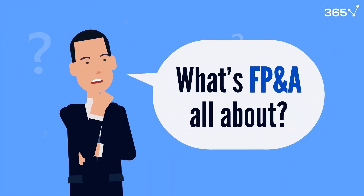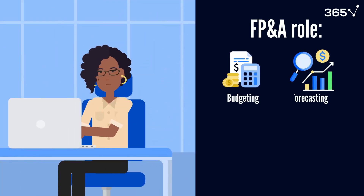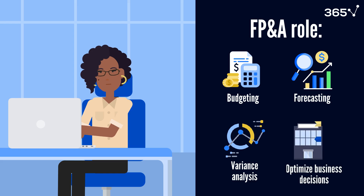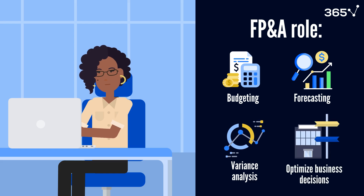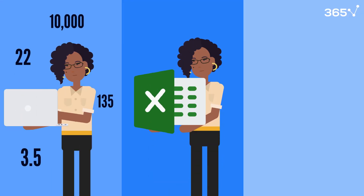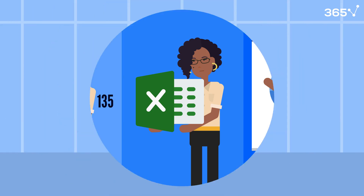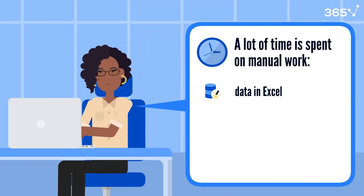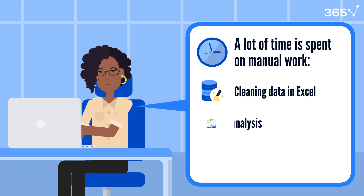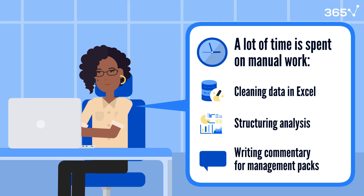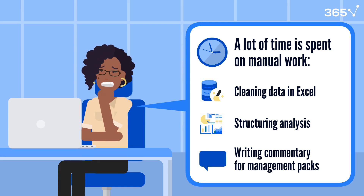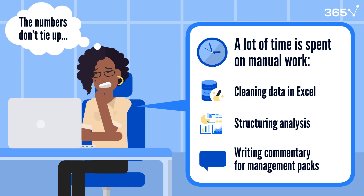First, what's FP&A all about? An FP&A role revolves around budgeting, forecasting, variance analysis, and helping the business make better decisions with data. An FP&A professional constantly deals with numbers, Excel, and presentations for senior management. But here's the truth: a lot of their time is spent on manual work — cleaning data in Excel, structuring analysis, writing commentary for management packs, and sometimes staring at a spreadsheet trying to figure out why numbers don't tie up.